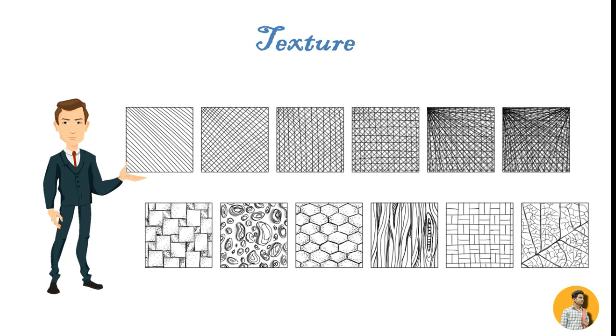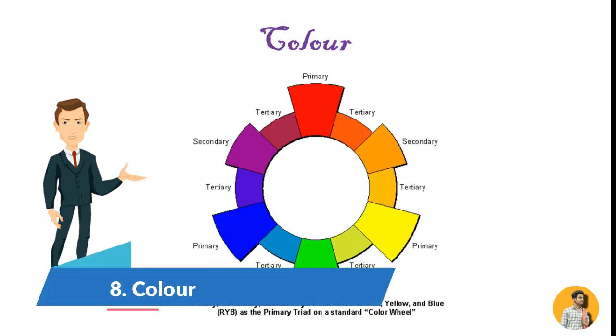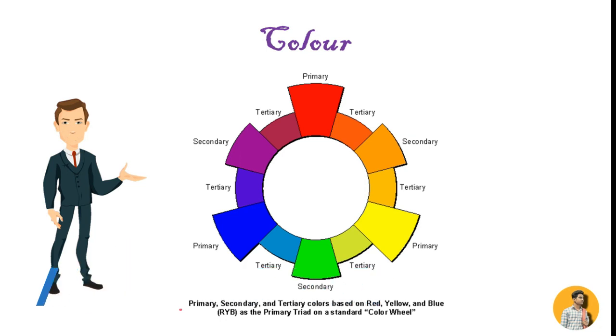Eighth is color. Color is light reflected off objects. Color has three main characteristics: hue, value, and intensity. How light or dark it is comes in value, how bright or dull it is comes in intensity. The colors are primary, secondary, and tertiary colors based on red, yellow, blue as the primary triad.